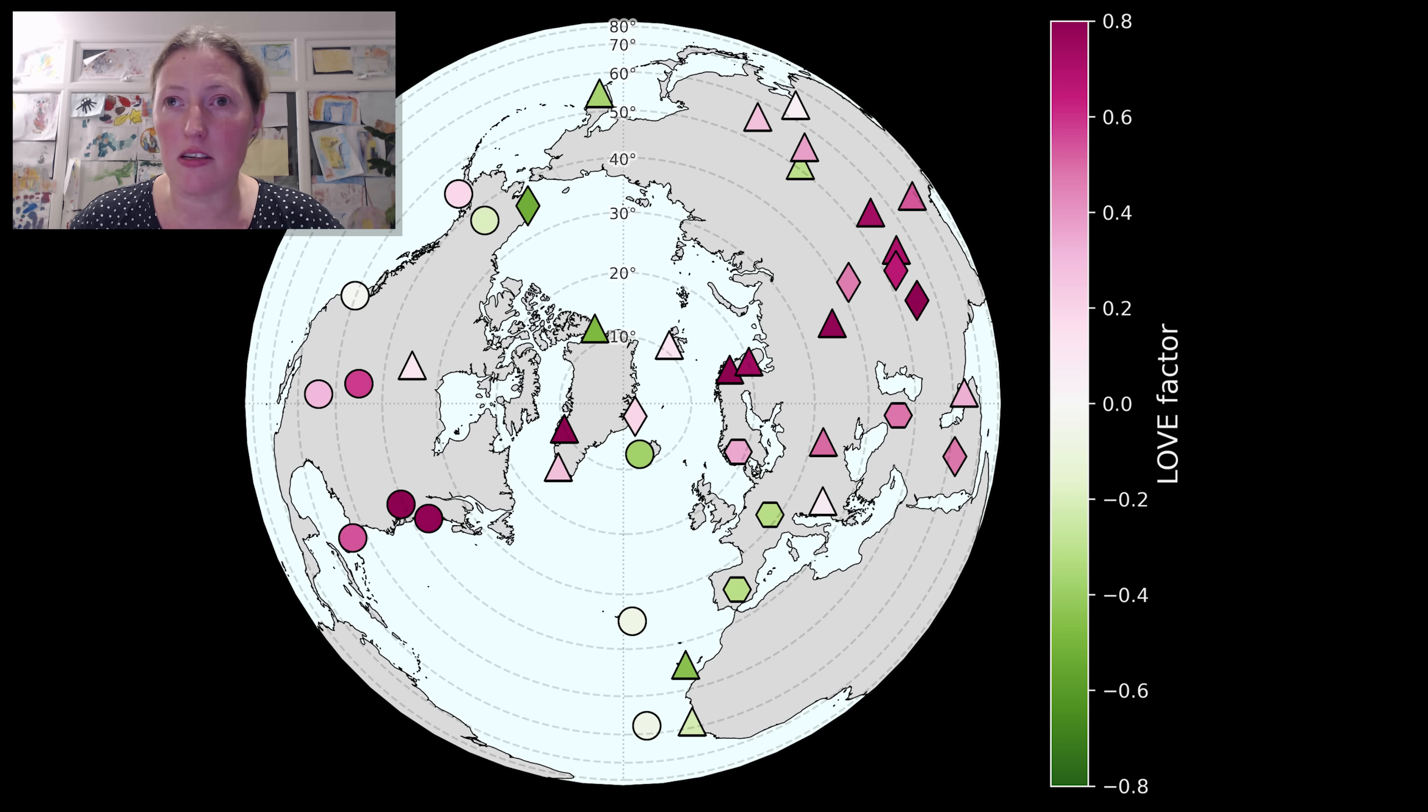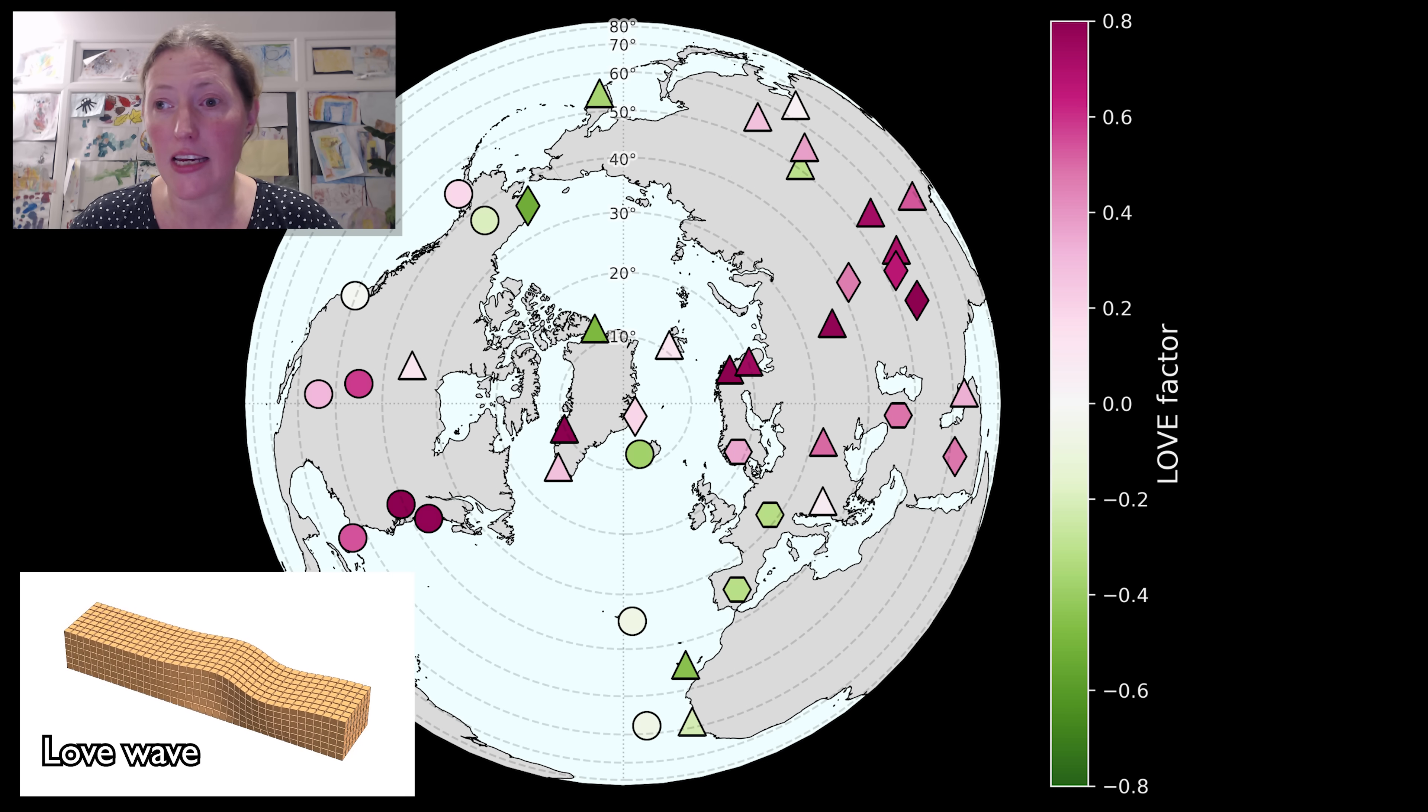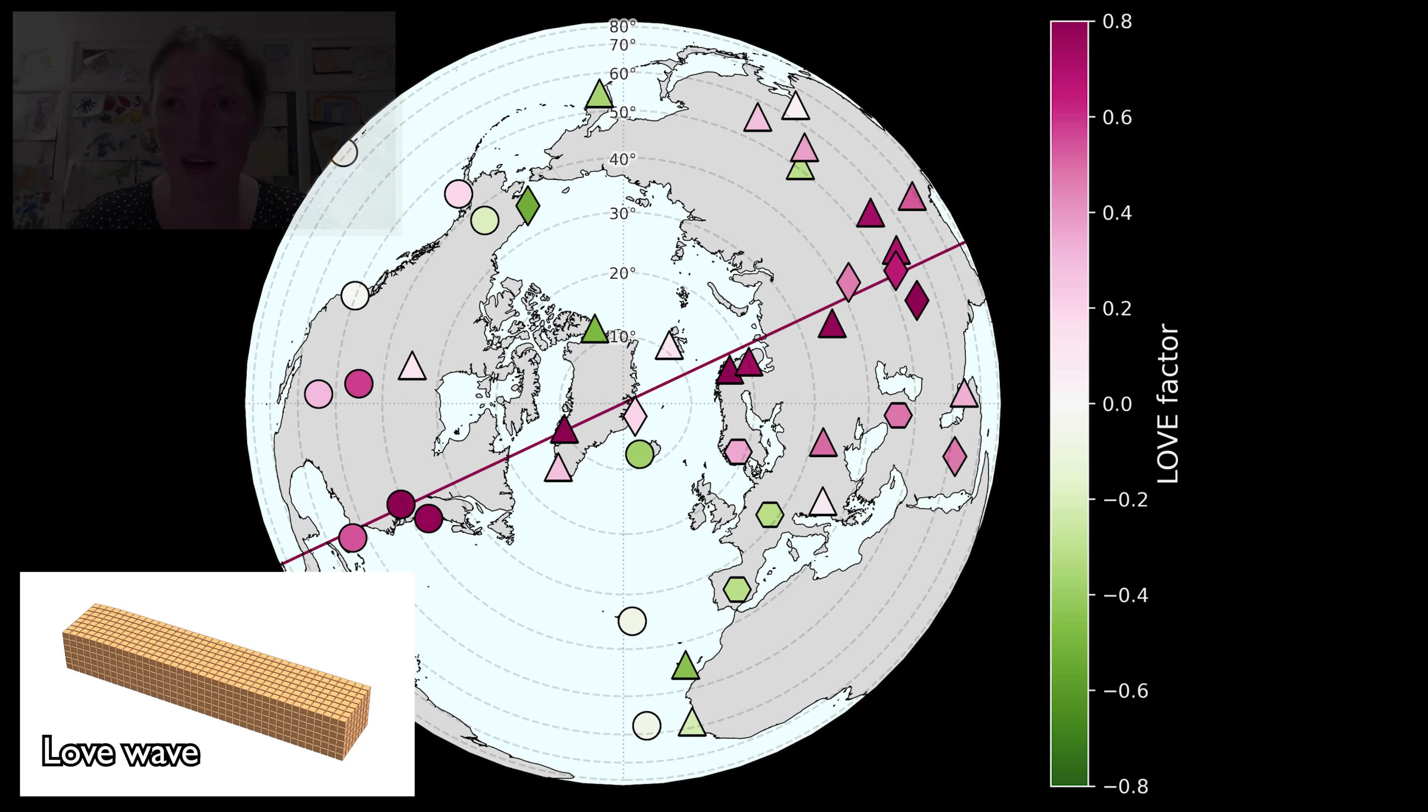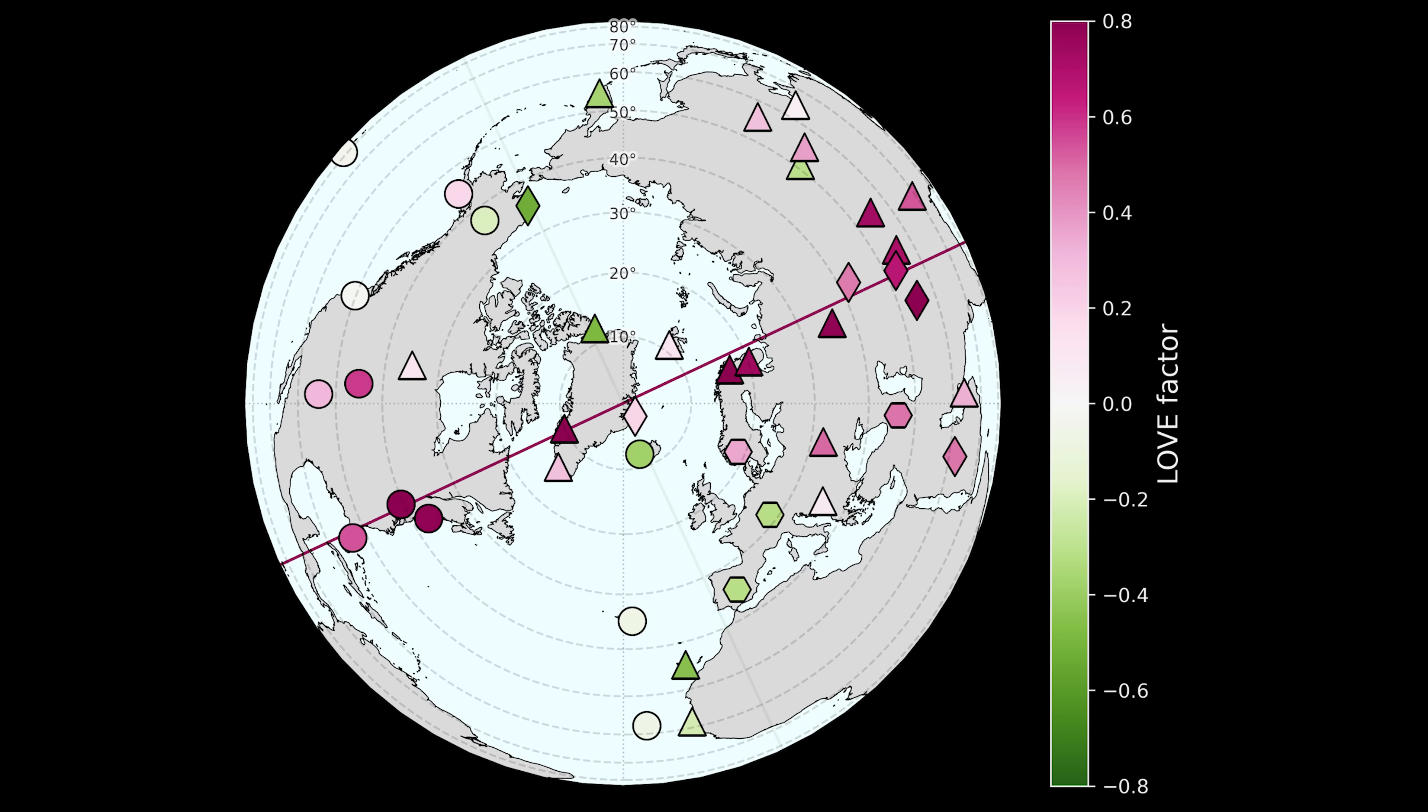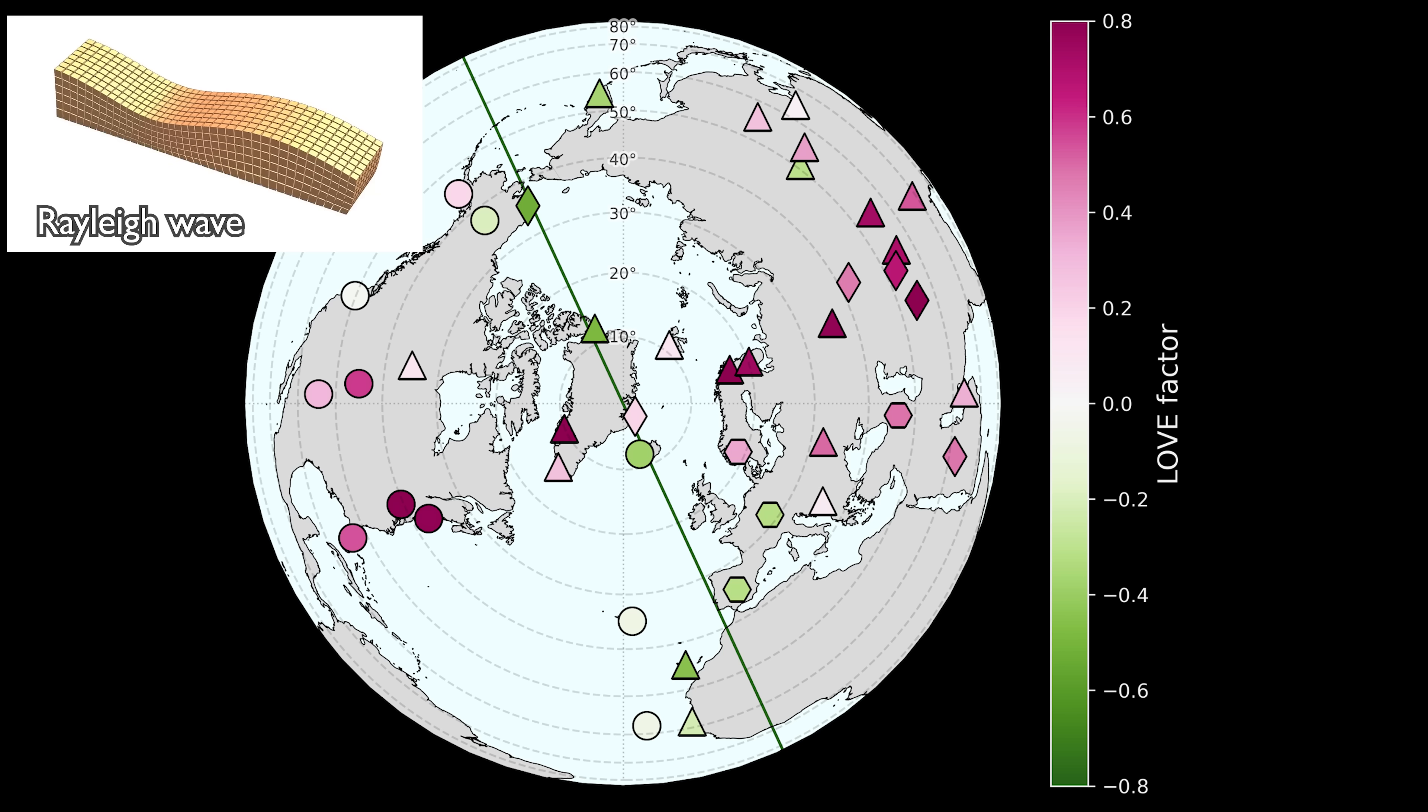Purple stations mainly recorded a side-to-side snaking type of motion, which we call a love wave. Green stations recorded an up and down rolling motion called a Rayleigh wave.